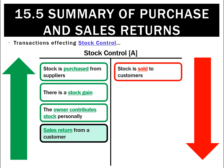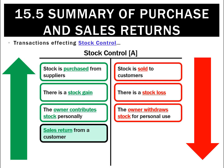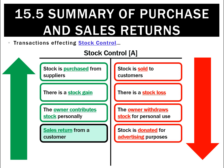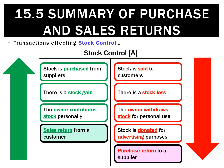What makes the stock control ledger go down? We could sell stock to customers — that's basically the opposite of purchasing it. The opposite of a stock gain is a stock loss. The opposite of the owner contributing stock is the owner making drawings. We also had the owner donating stock for advertising purposes. And whilst sales returns make stock control go up, purchase returns make it go down. So four things make stock go up on the debit side, and five things make it go down.